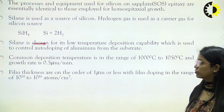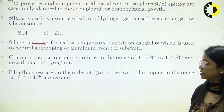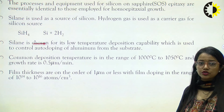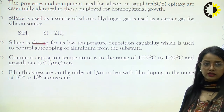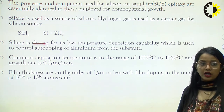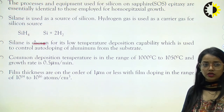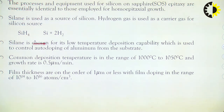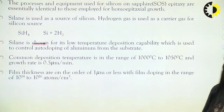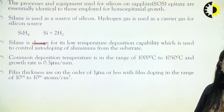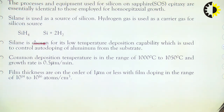Silane is used for this process as a source of silicon, and hydrogen gas is used as a carrier gas for the silicon source. SiH4 gives out Si plus 2H2. Silane is chosen for its low temperature deposition capability, which is used to control auto-doping of aluminium from the substrate. The common deposition temperature is in the range of 1000 to 1050 degrees Celsius and the growth rate is 0.5 micrometer per minute.